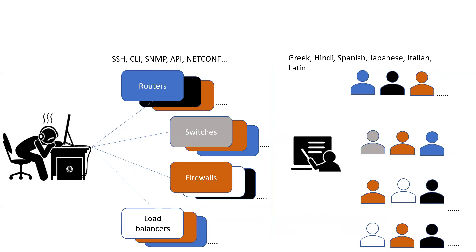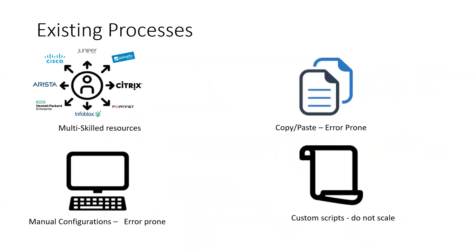Let's look at the existing processes and how a network admin manages the network today. For a multi-vendor network, IT resources have to ramp up on each of the vendor commands and keep updating their knowledge due to frequent changes that vendors make. Manual configurations are error prone and any mistakes may result in network outages. Similarly, with copy-paste, there is always a risk of configurations going wrong. Admins might have created templates, but a find-and-replace error can also result in a network outage. Admins have started using custom scripts or software programs to configure devices, but this is only a stop-gap arrangement as it does not scale for large networks and frequent customizations will have to be done.